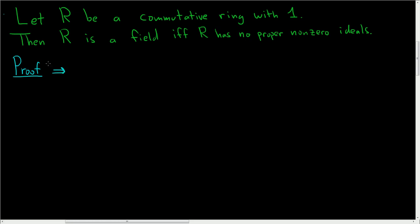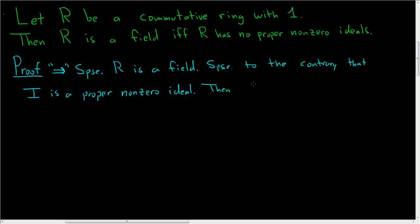Let's start by proving that if R is a field, then R has no proper non-zero ideals. So suppose R is a field, and let's try this by contradiction. Suppose, to the contrary, that I is a proper non-zero ideal. This means that I is not equal to the entire ring and I is not equal to the ideal generated by 0.